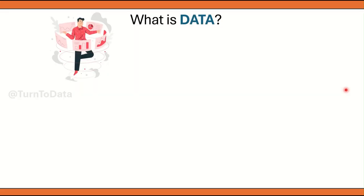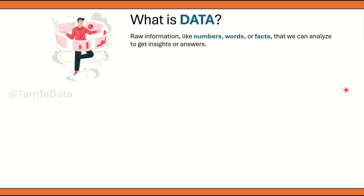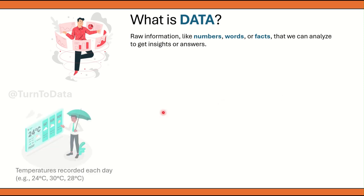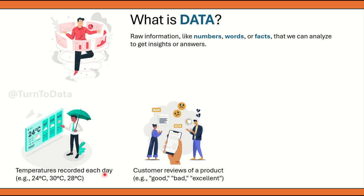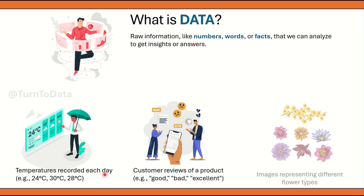What exactly is data? Data is nothing but raw information in the form of numbers, words or facts, and this raw information can be further analyzed to get insights or answers. Let me give you a few examples. Temperatures recorded each day is an example of data. Then you have customer reviews of a product, and images representing different flower types. These are just a very few examples.